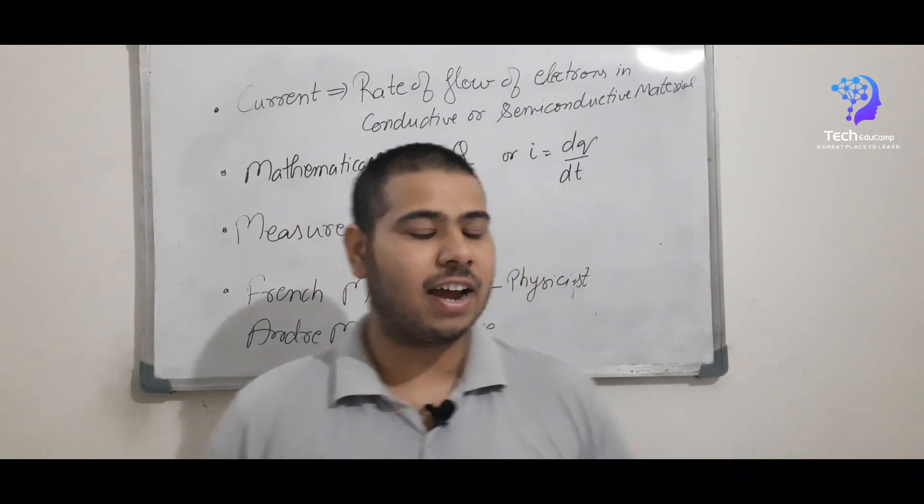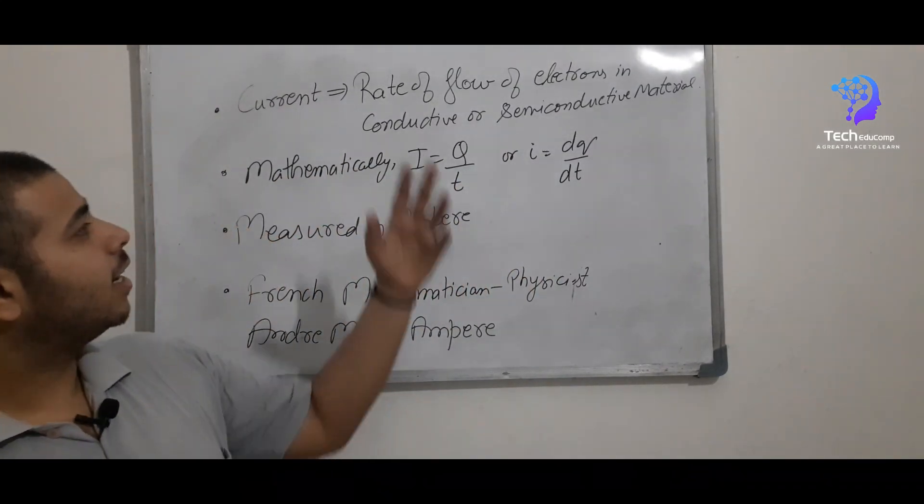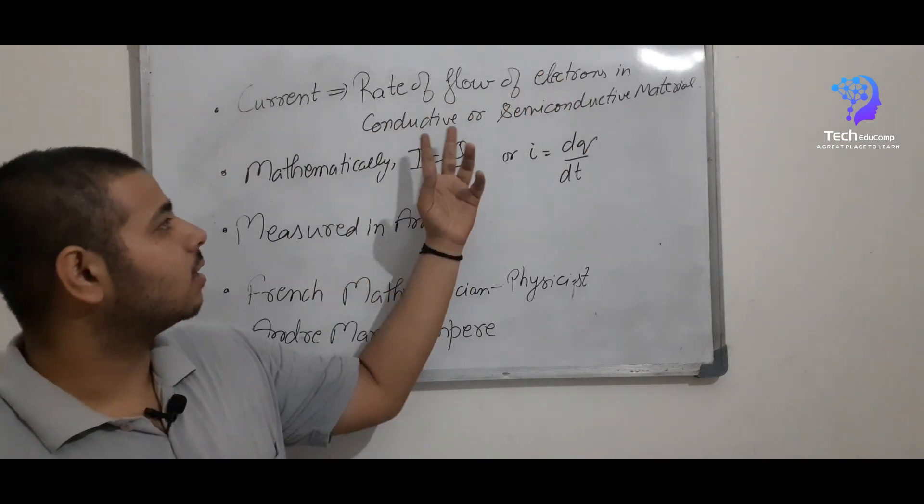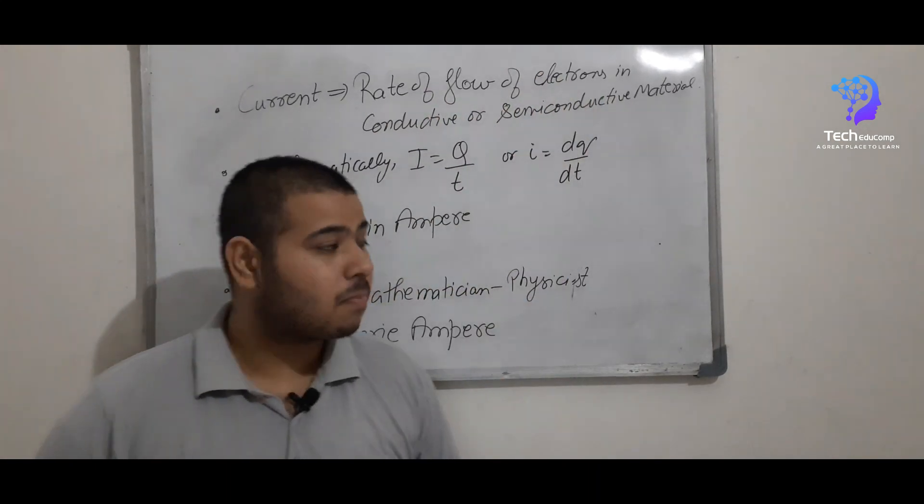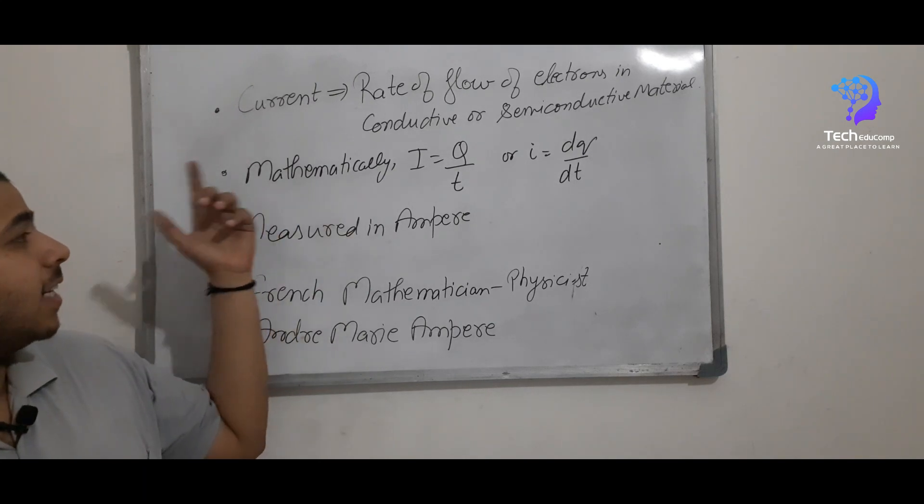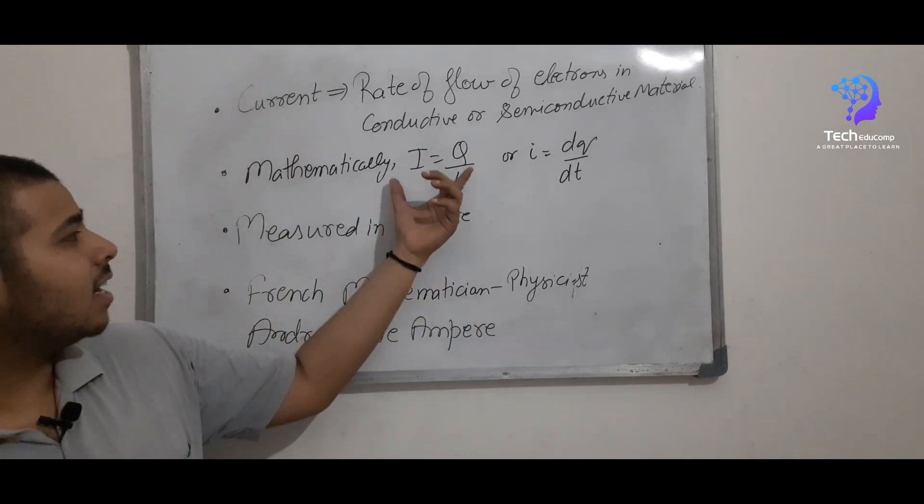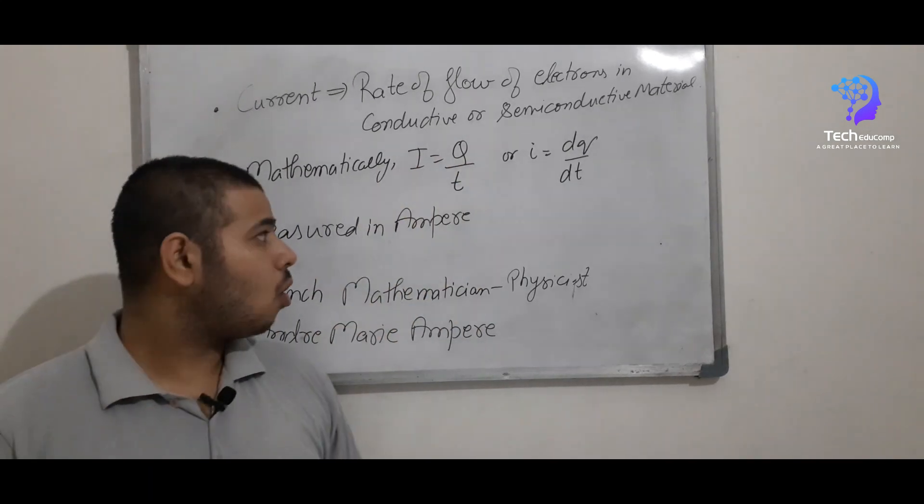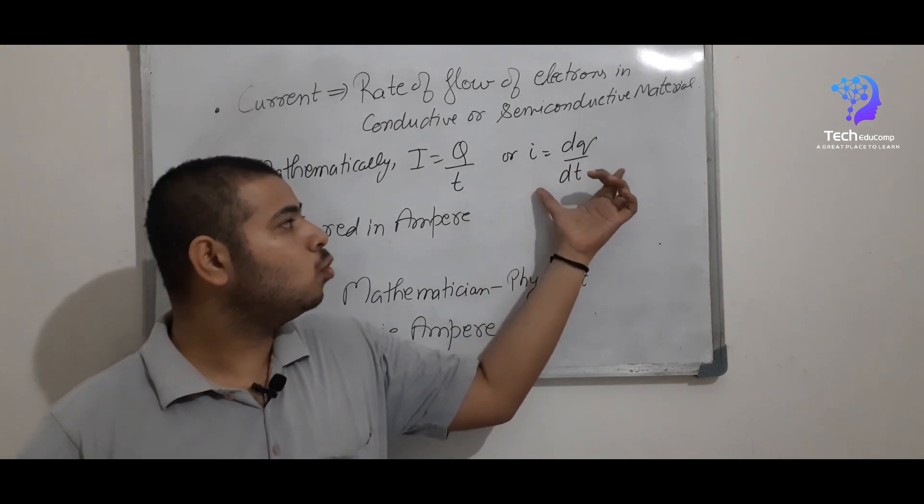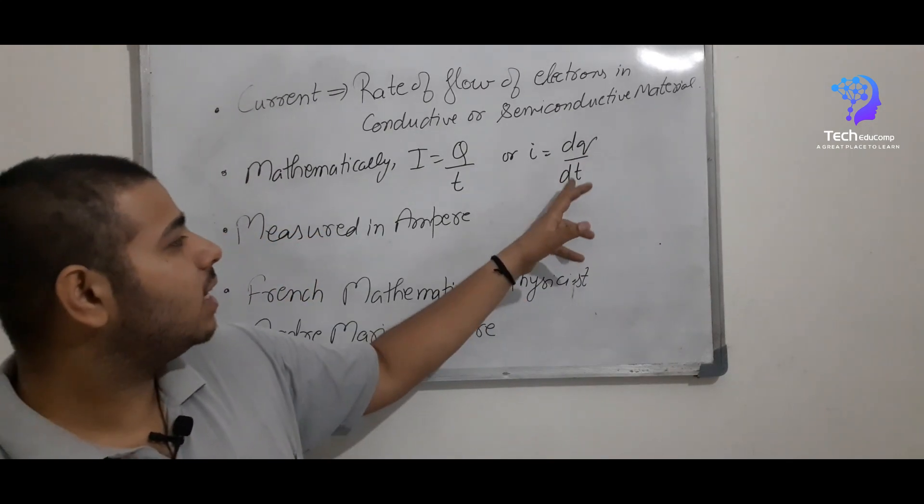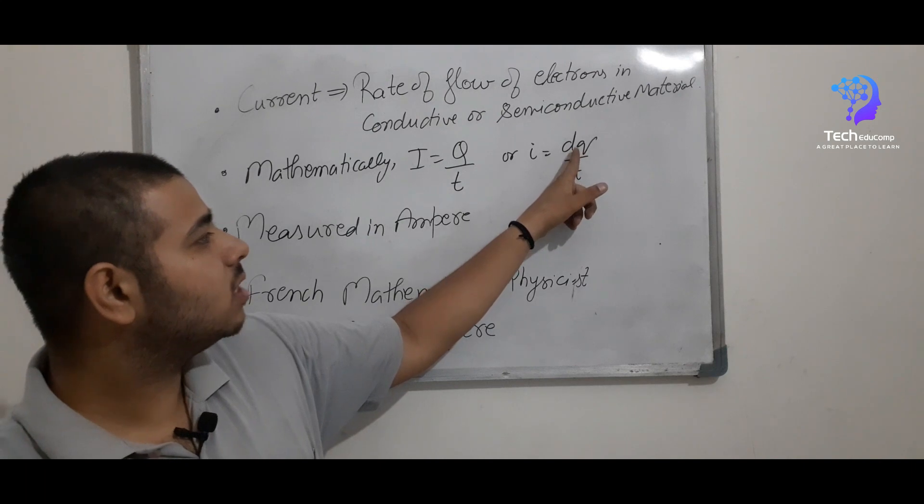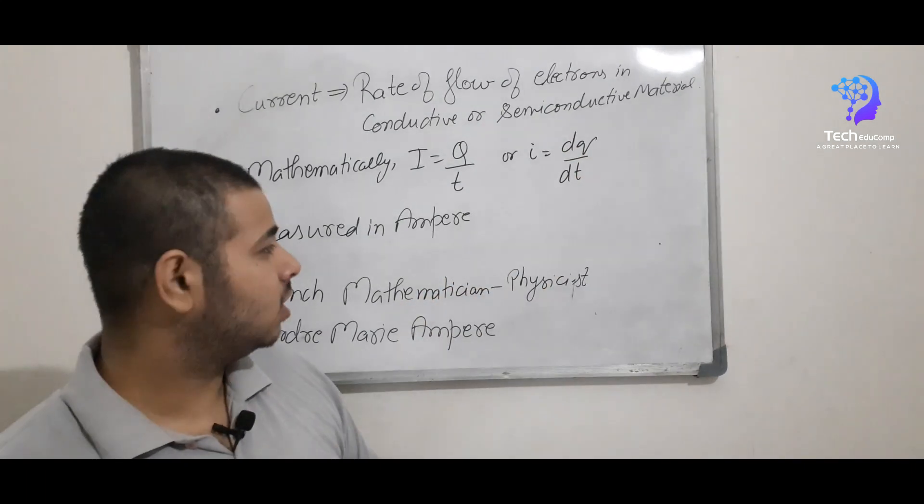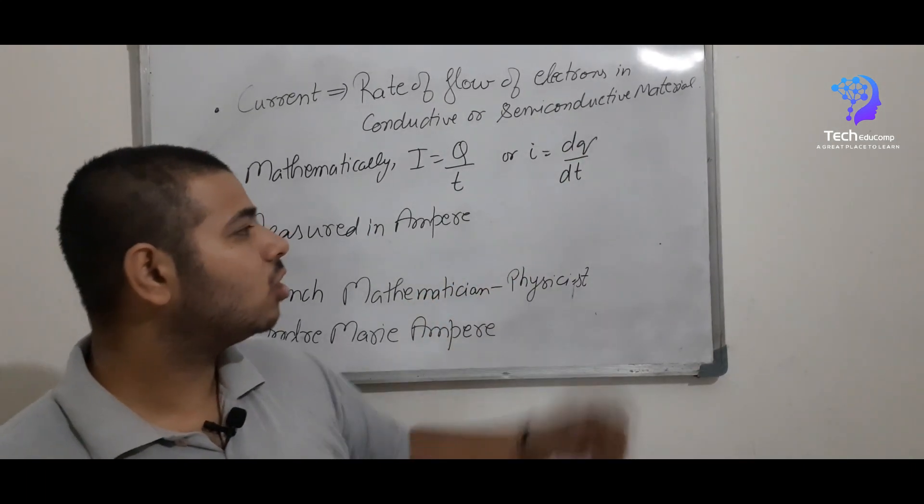So from here, we can define the current as a rate of flow of electrons in conductive or semi-conductive materials. We can also define it mathematically as i equal to q by t or small i equal to dq by dt. Here dq by dt represents dq is a small change in charge and dt represents small change in time.